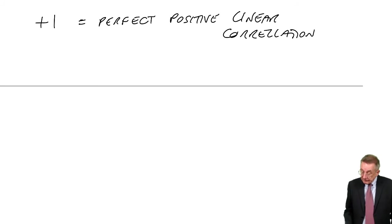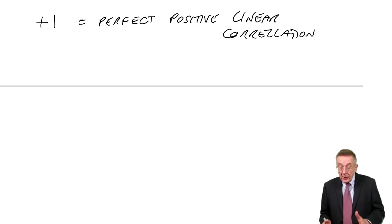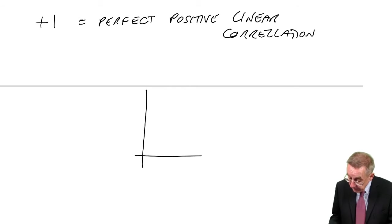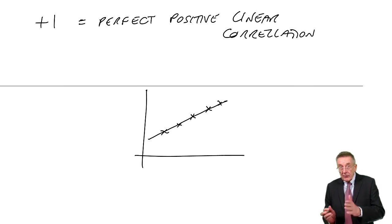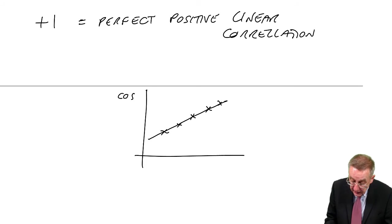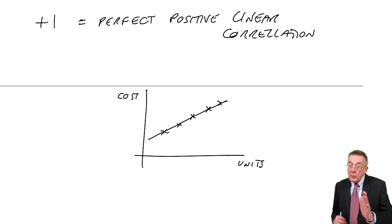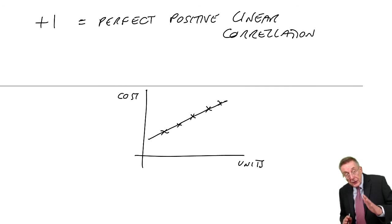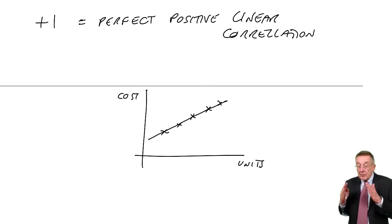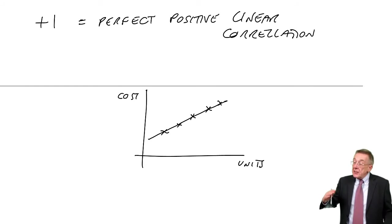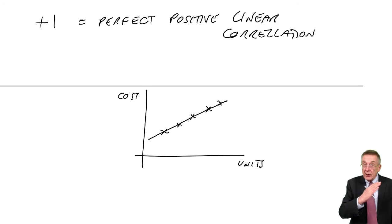And what that means is that if we did put all the points on a graph, the points would lie exactly on a straight line going upwards. That they both increase together, which is what was happening with ours. The costs are against the units. As you had more units, you have more cost. So they're both going up together. Well, plus 1, if it's positive, they're going up together. If it's 1, it means it's perfect. It's exactly on a straight line.